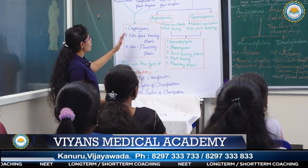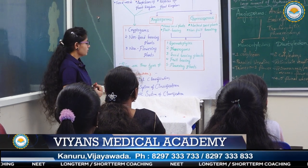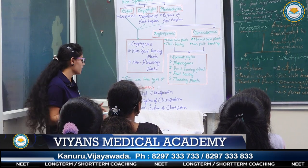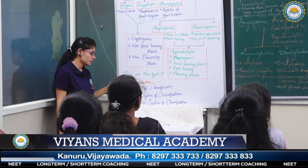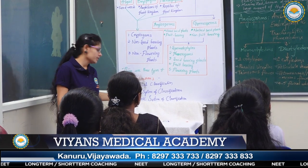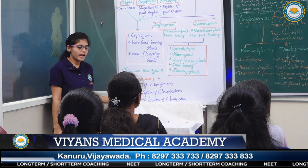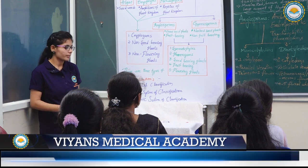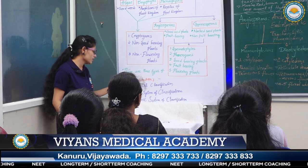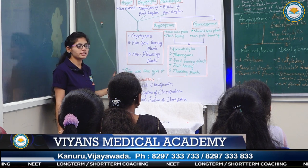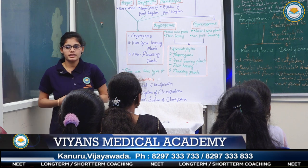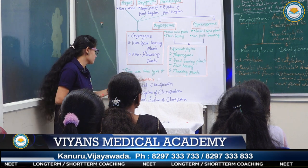This is a flow chart about Plant Kingdom. There are mainly three types of classifications: artificial system of classification, natural system of classification, and phylogenetic system of classification. The artificial system of classification was mainly discovered by Theophrastus and Linnaeus. Theophrastus identified plants which are majorly three types: herbs, shrubs, and trees.